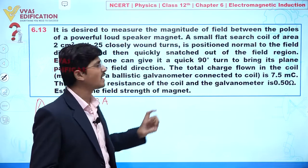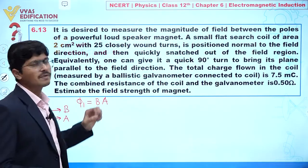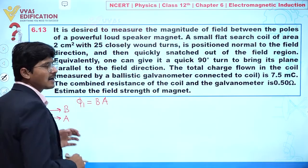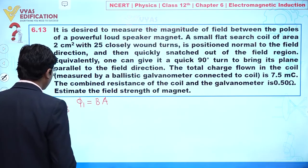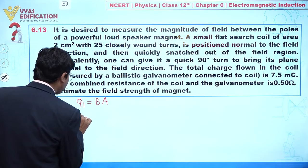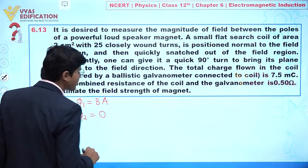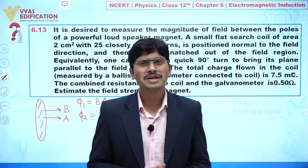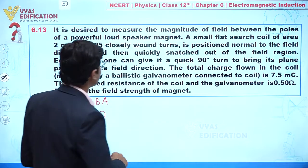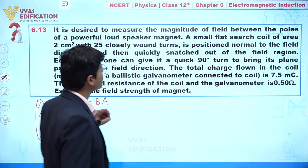It is also given that we give a 90-degree turn to bring this plane parallel to the field direction. When we rotate it 90 degrees, the angle between B and A becomes 90 degrees, so the flux passing through the coil becomes 0.